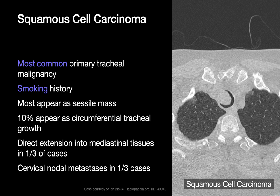Squamous cell carcinomas are the most common malignant tracheal tumor, generally associated with a history of smoking. On CT imaging, they usually appear as a sessile polyp within the tracheal lumen, though about one in ten may present as a more circumferential growth rather than an eccentric polyp. A significant number invade the mediastinum surrounding the trachea at the time of discovery, and nodal metastases may also be encountered.